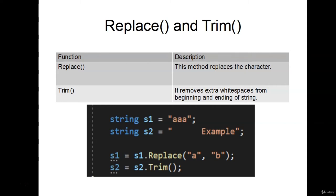Let's start with Replace and Trim. The Replace method replaces a character in a string. For example, we have S1 which equals 'AAA.' We call the Replace method and pass two things: the character we're looking for and the character we want to replace it with. Here we're looking for 'A' and replacing with 'B,' so 'AAA' becomes 'BBB.'